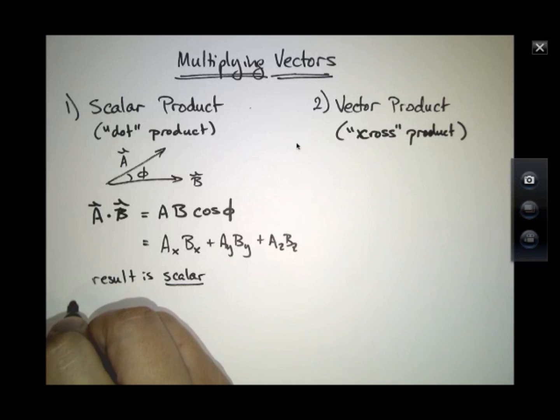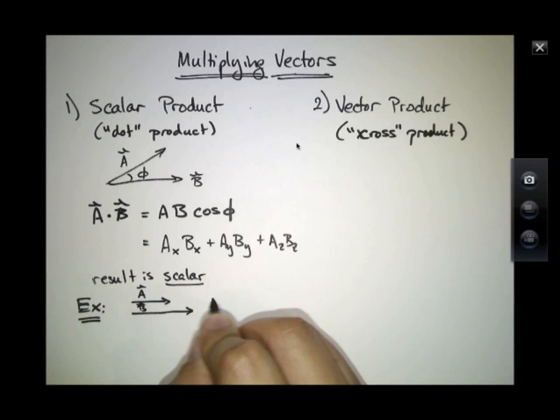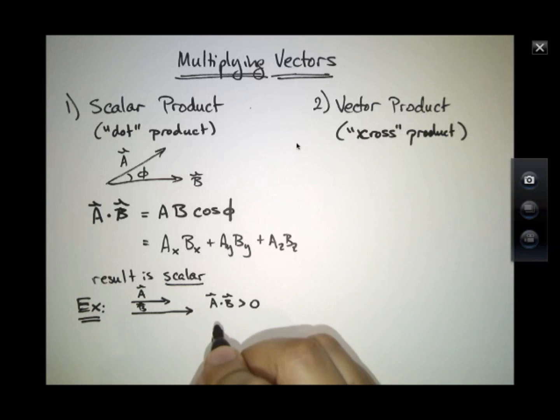It's not always the case that the scalar has to be a positive number. For example, this little cartoon produces a dot product that's greater than zero. It produces a dot product that's equal to the product of the two magnitudes because I've drawn them parallel. So the angle between the two vectors is zero, and the cosine of that angle would be one. So A dot B would just equal A times B.